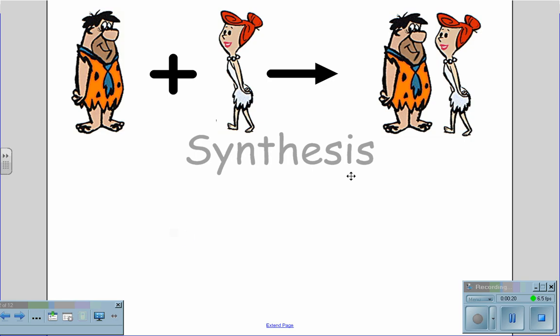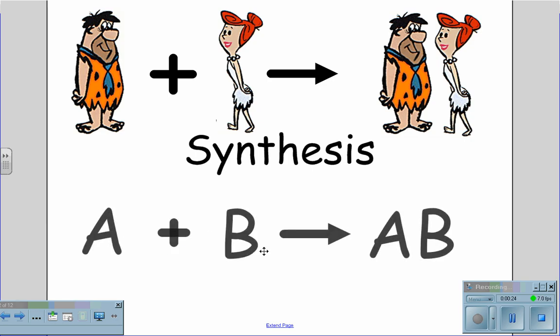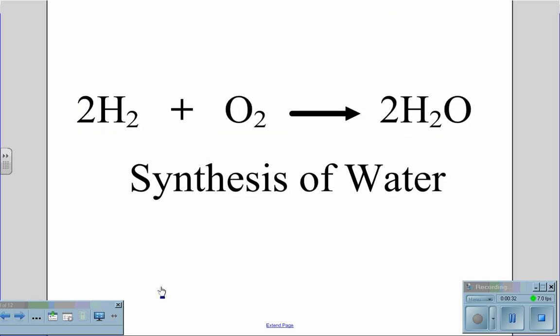This is called synthesis. When substance A is added to substance B and you get a combined compound of AB, you have created synthesis, similar to when hydrogen and oxygen bond together to form the molecule water, the synthesis of water.